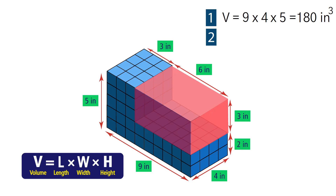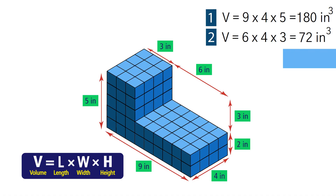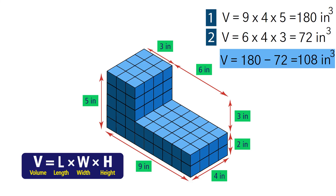Now we can find the volume of the red prism: 6 times 4 times 3 equals 72 inches cubed. To find the volume of the composite figure, we subtract the volume of the empty space from the greatest possible volume: 180 minus 72 equals 108 inches cubed. So the volume of the composite figure is 108 cubic inches.